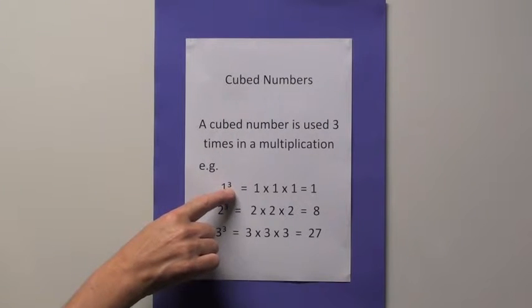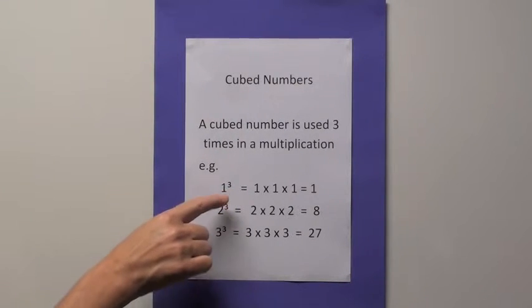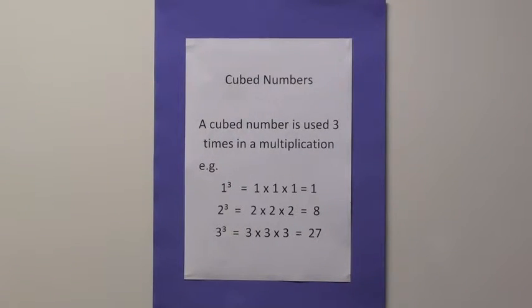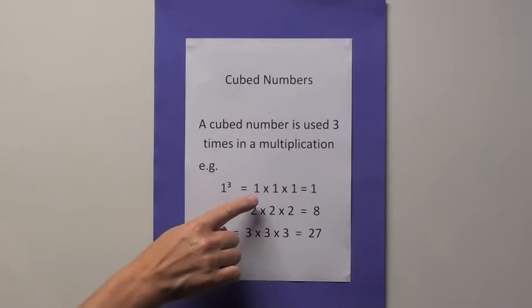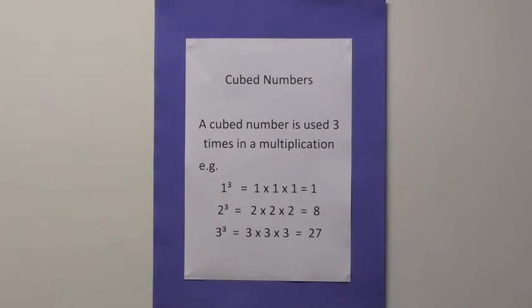A cubed number has a small 3 next to it. And this number here can be called 1 cubed, or 1 to the power of 3, which simply means 1 times 1 times 1, which equals 1.